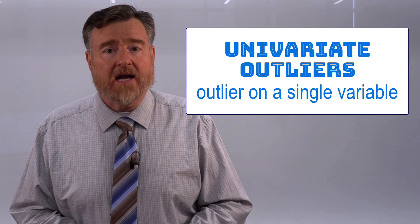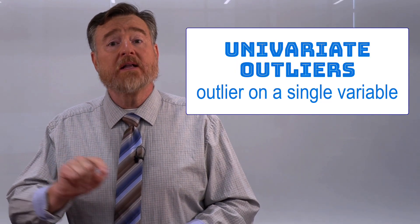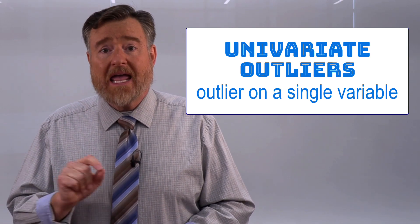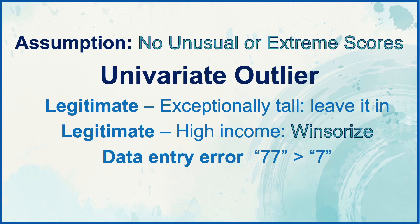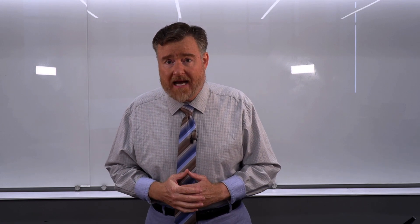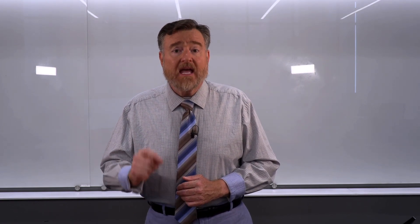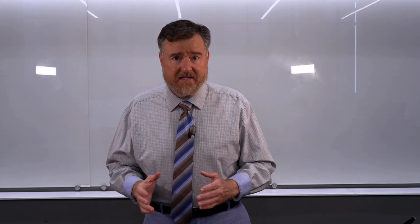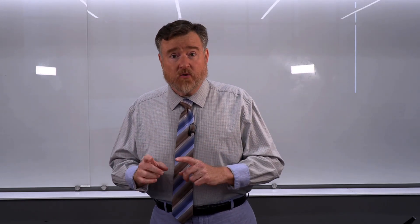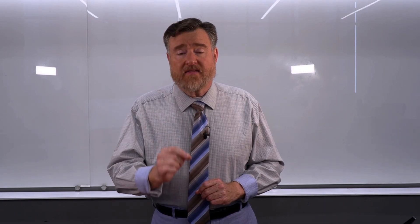There are two types of outliers we might encounter, and we would address them differently. Univariate outliers are outliers on a single variable. If we have a univariate outlier that is legitimate, such as someone who is exceptionally tall, we could just leave that data point in our data set, especially if it's not causing problems. However, if a legitimate outlier is exerting influence on our data set and distorting findings, we can winsorize that data point.